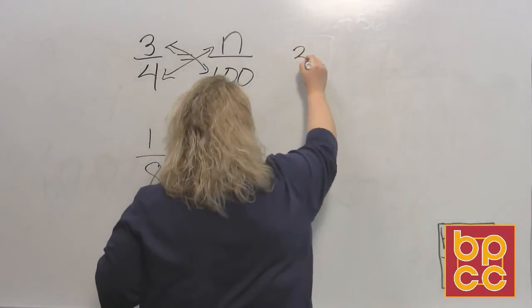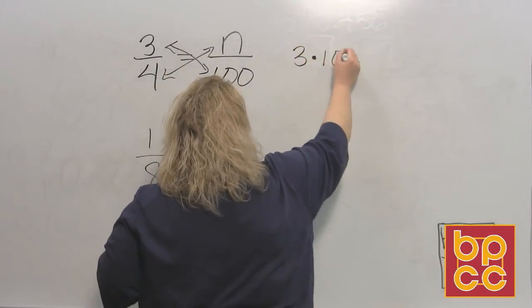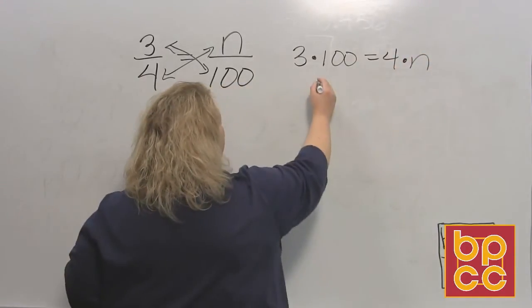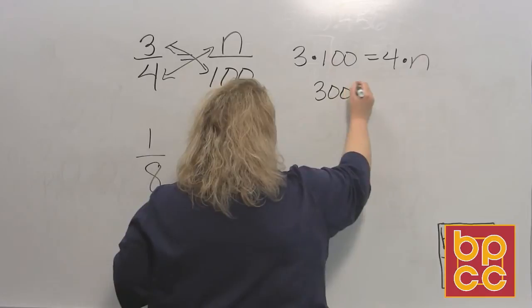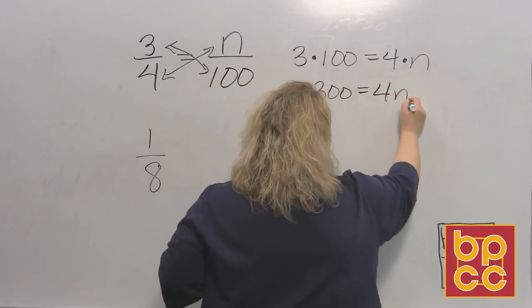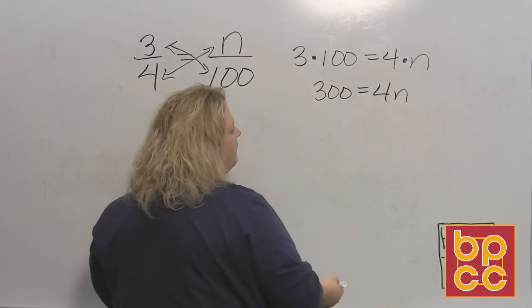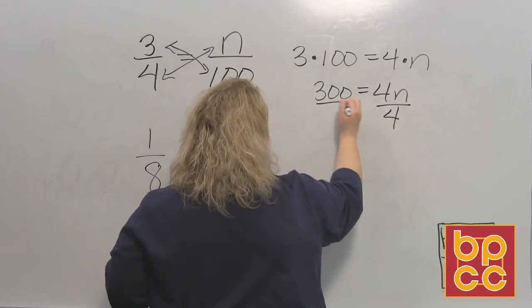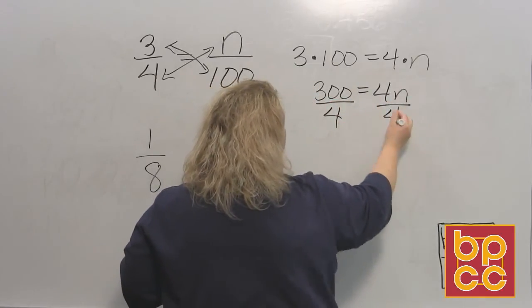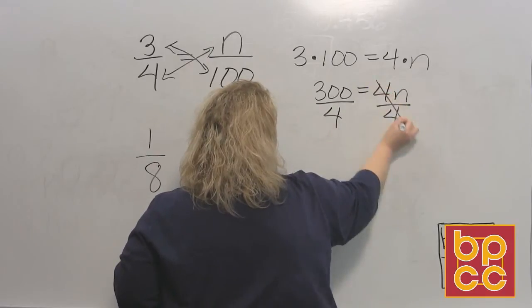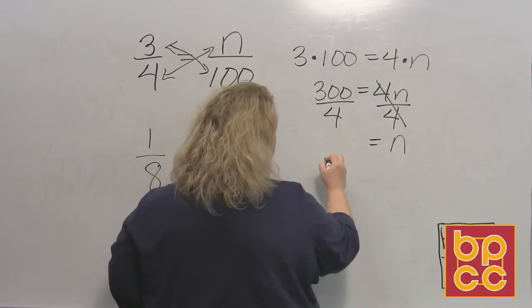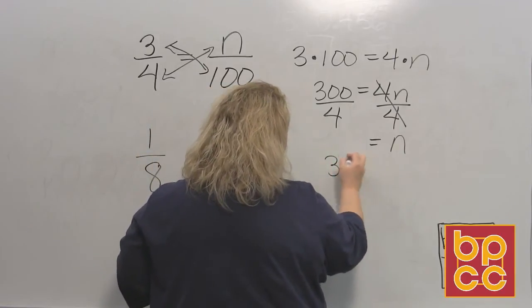This would be 3 times 100 equals 4 times n. So 3 times 100 is 300, and that's equal to 4n. So again, you want to find out the n. And in order to do that, you get rid of the number attached to the variable by doing division because you do the opposite. So that gives you n, and that's equal to 300 divided by 4.